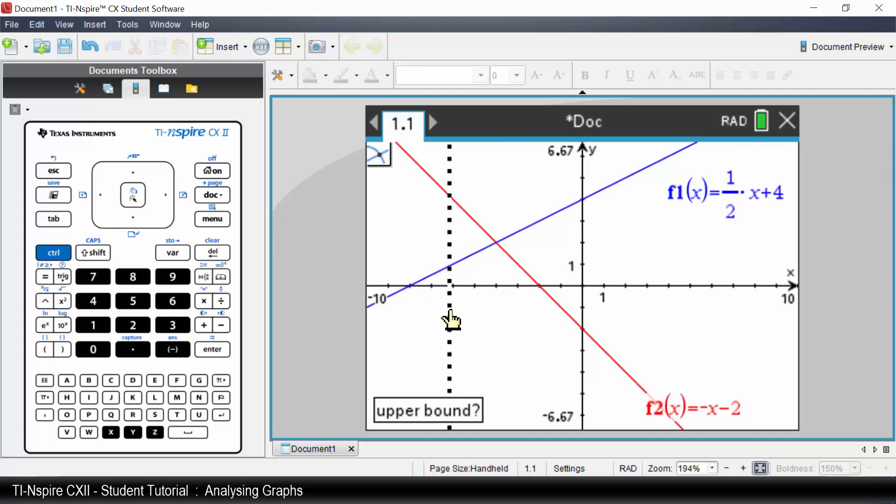On the calculator, use the touchpad to move the upper bound to be greater than negative 4 and press the center of the touchpad. As I'm using the computer software, I will use the mouse to set the upper bound. The point of intersection is negative 4, 2.